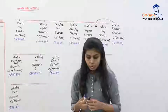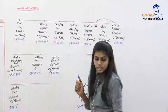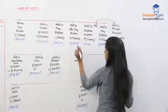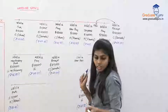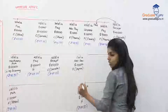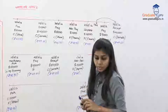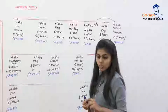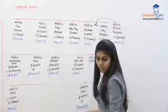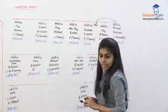On 1st October 2012, advance of 10,000 dollars is received from J of Japan at a rate of rupees 46. On 15th October 2012, goods worth 30,000 dollars are exported to J of Japan. The advance was 10,000 dollars and the export is 30,000 dollars. The rate on 15th October is rupees 46.25.